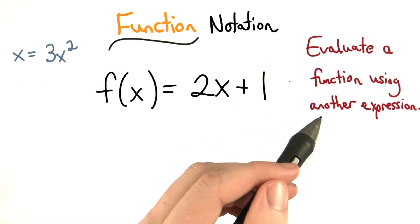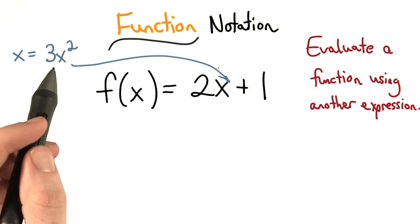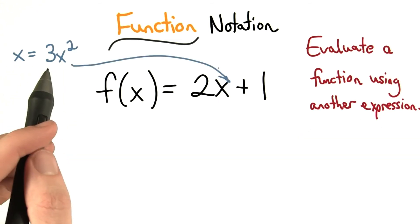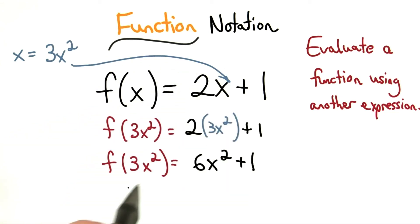We don't have to evaluate our function for just numbers though. We could also use another expression. For example, if my input x was 3x squared, I would plug it into my function. So the output of 3x squared would be 6x squared plus 1. This would be the answer containing a variable. Notice it's not just a number.